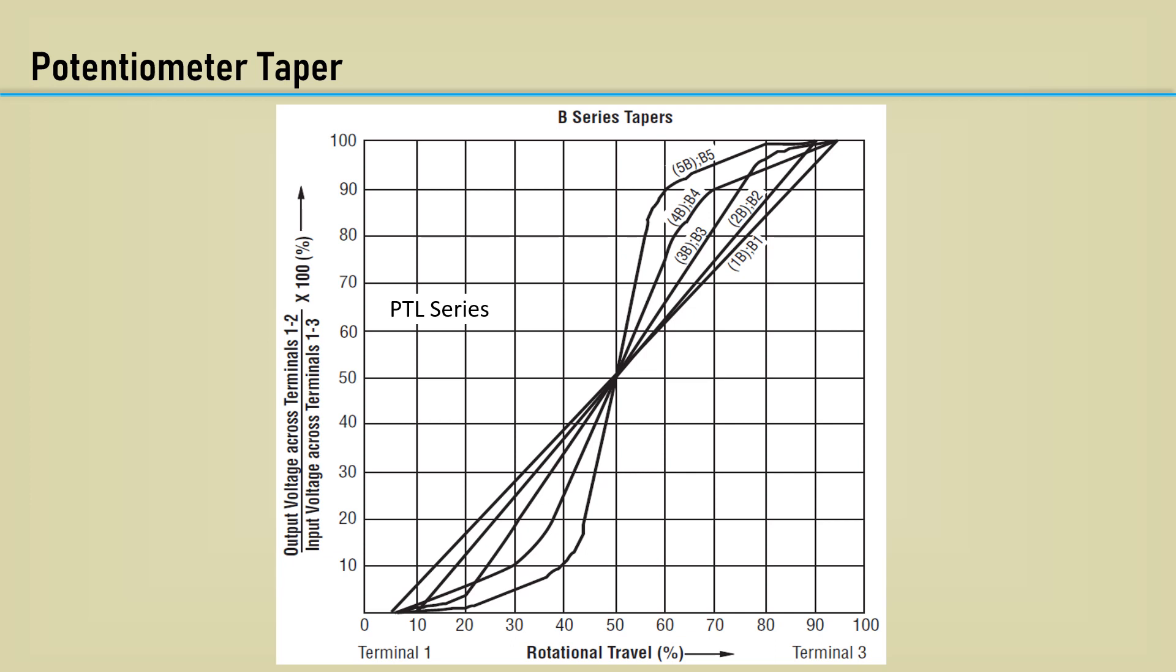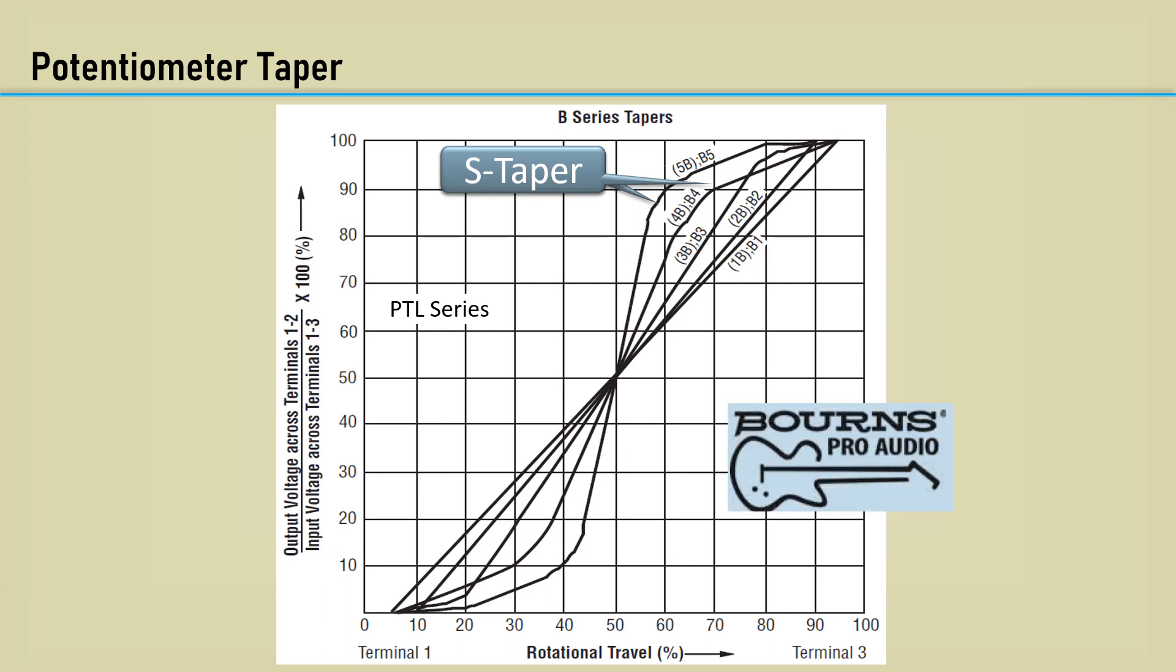Another important part about the potentiometer is the taper. For audio applications, logarithmic pots are used. Since the cut-boost control is usually a slider with the cut and boost at the extreme ends, two tapers are necessary, one at each end. It's in the shape of an S, so it's often referred to as an S taper. This chart shows the resistance versus rotational travel. This Bourne's PTL series has multiple S-shaped tapers, but for some reason they label it the B-series taper. This is inconsistent with the rest of the industry. Typical taper codes are A for audio and B for linear.